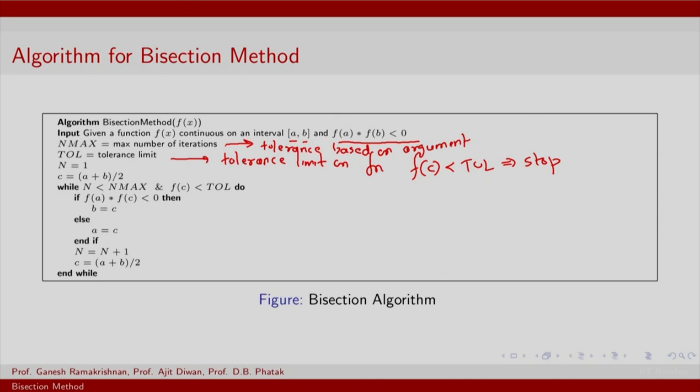But there is also another implicit tolerance parameter which is number of iterations. This is tolerance based on argument. So for example, you might have a curve which gets to 0 very gradually. Now curve like this gets to 0 very gradually and it is possible that even after lots of iterations you are hovering around 0 but not exactly 0. So until you have this maximum number of iterations and the tolerance is reached, you do the following.